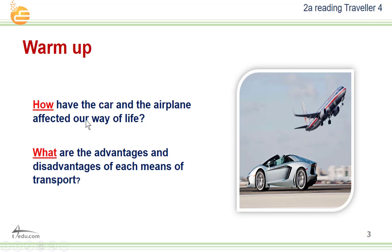I want you to answer these questions. How have the car and the airplane affected our way of life? For example, they facilitate our transportation — we could travel faster and easier, and we could go all over the world. What are the advantages and disadvantages of each means of transport? For example, cars are easier than airplanes to drive, and airplanes are faster than cars.